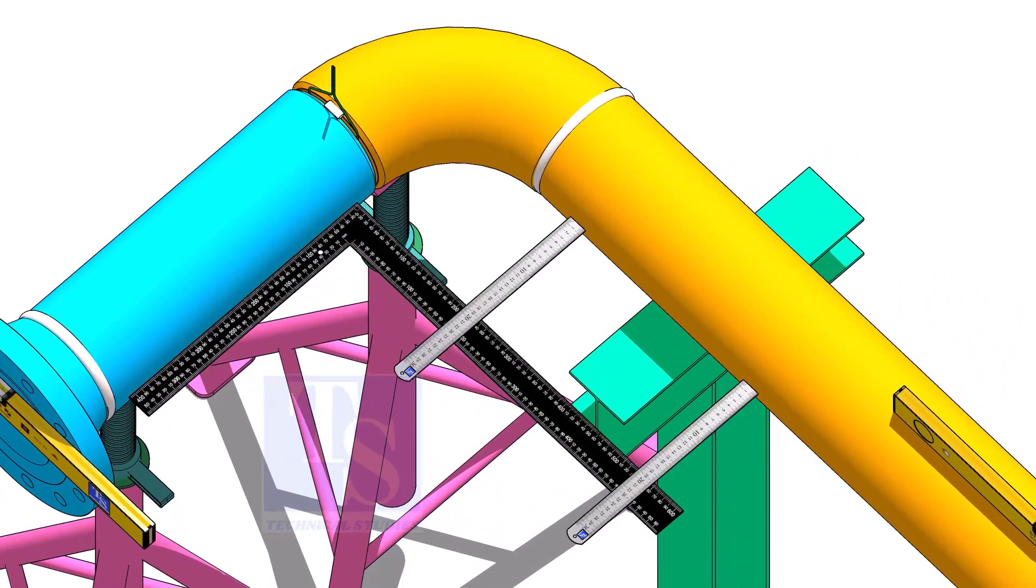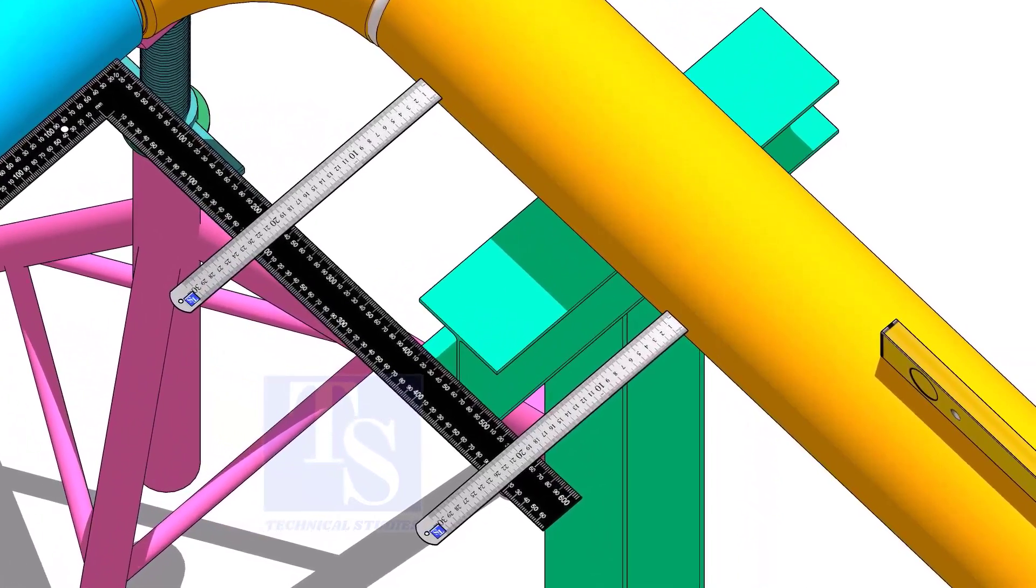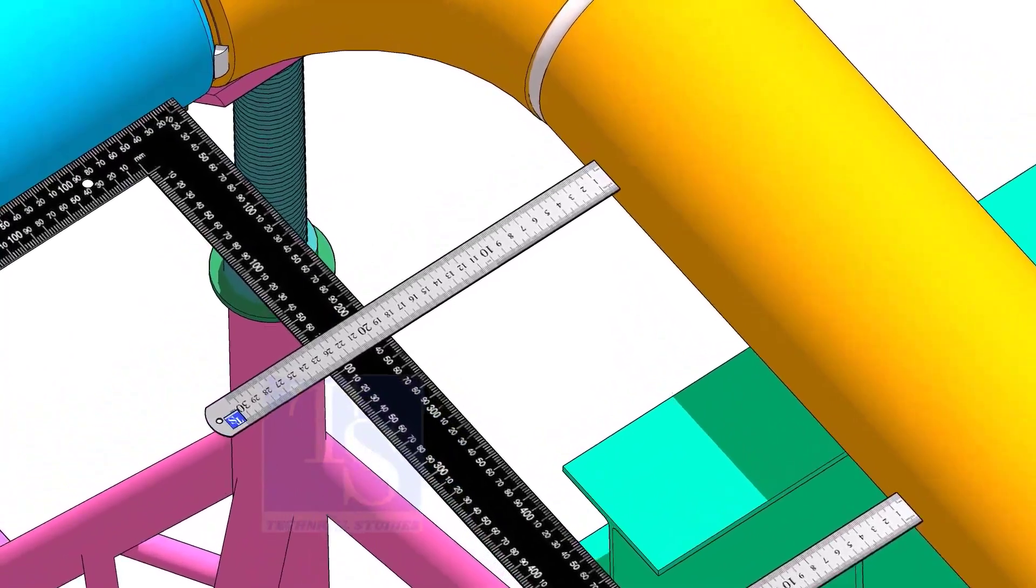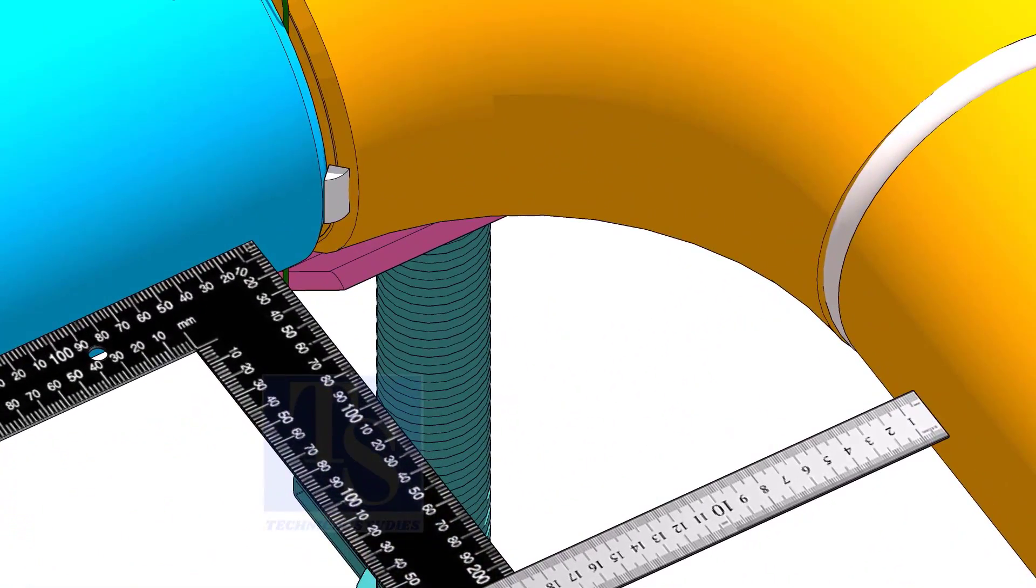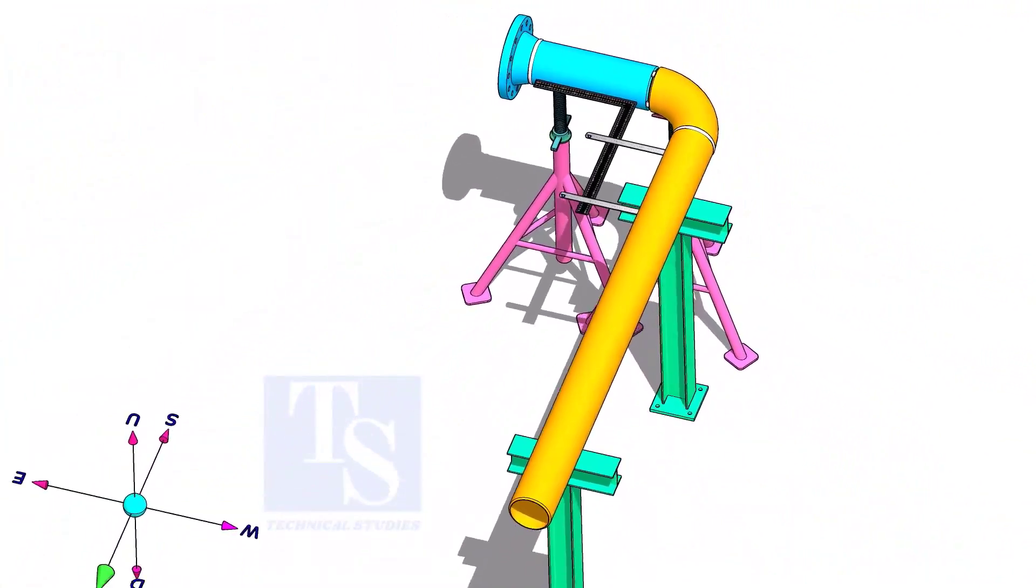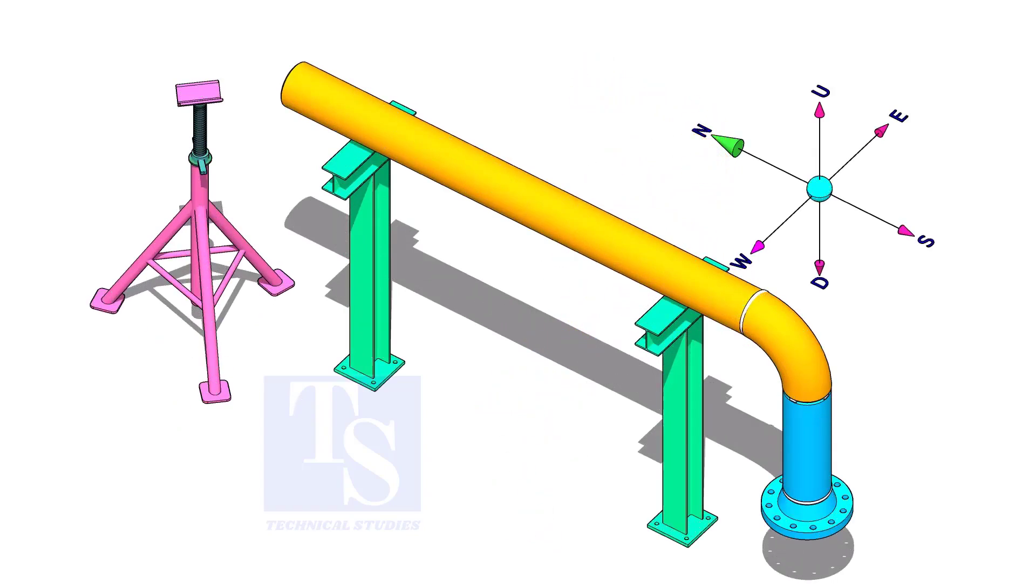Correct the squareness of the spools as shown and tack weld on the sides of the joint.